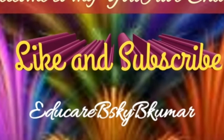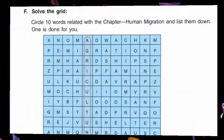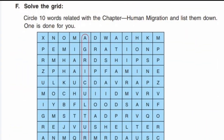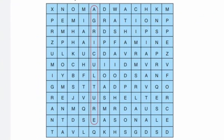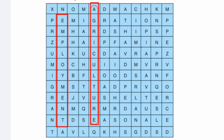Let's start question number F: solve the grid and circle 10 words related to the chapter 'Human Migration' and list them down — one is done for you. The first word is agriculture and the second one is employment.